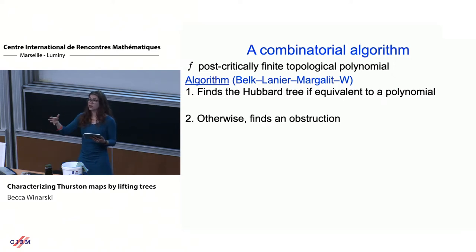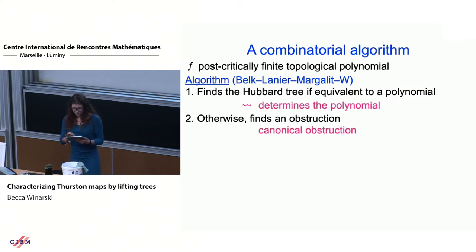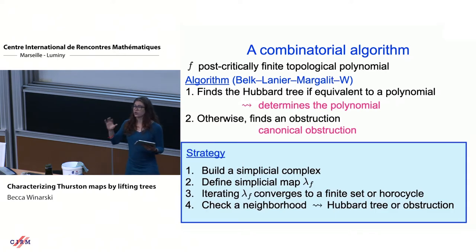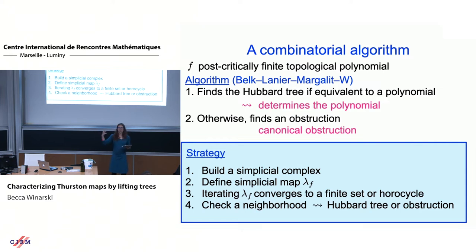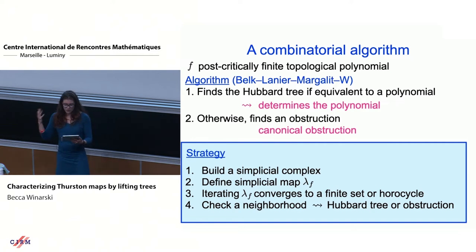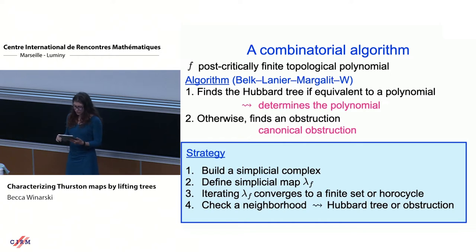What Belk, Lanier, Margalit, and I find is an algorithm that determines the Hubbard tree if a topological polynomial is equivalent to a polynomial, or it finds the canonical obstruction. The strategy is motivated from geometric group theory: we build a simplicial complex, define a simplicial map on that complex, and by iterating that map we converge to either a finite set in the polynomial case or an infinite set with specific structure in the obstructed case.